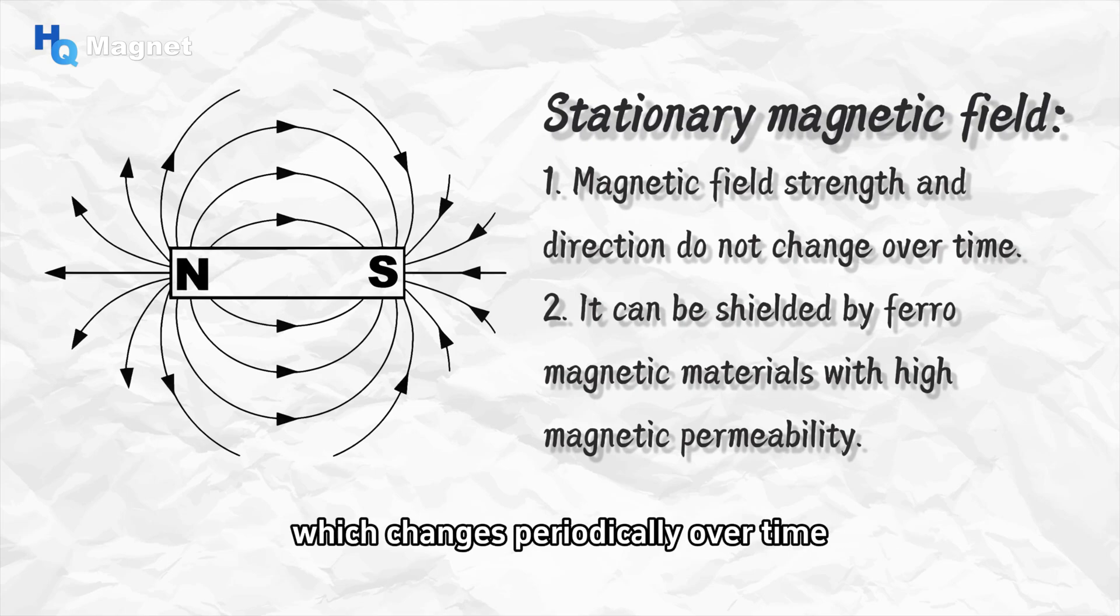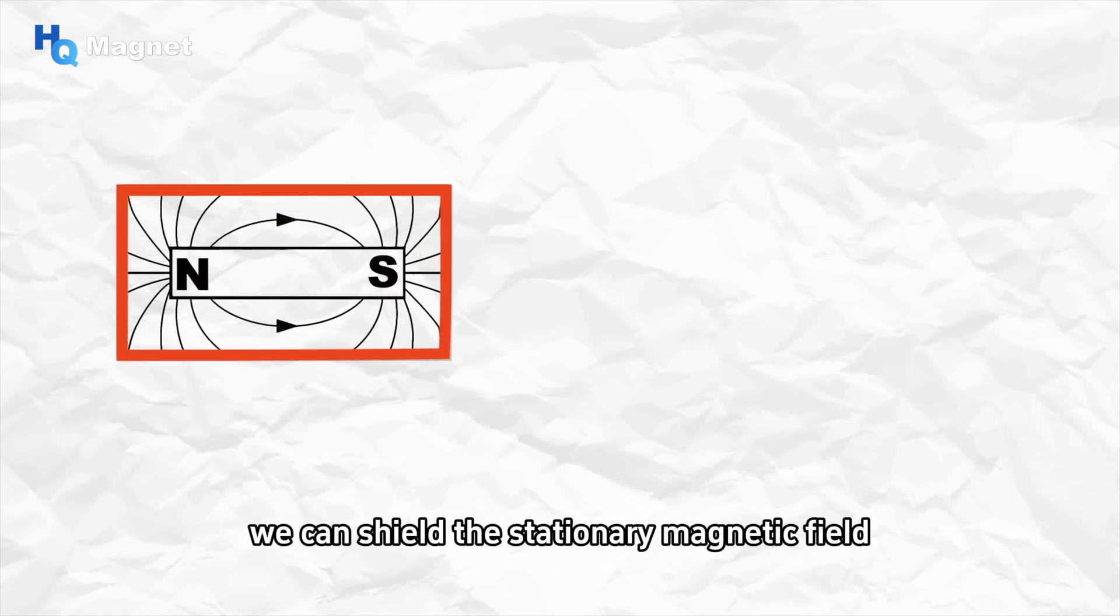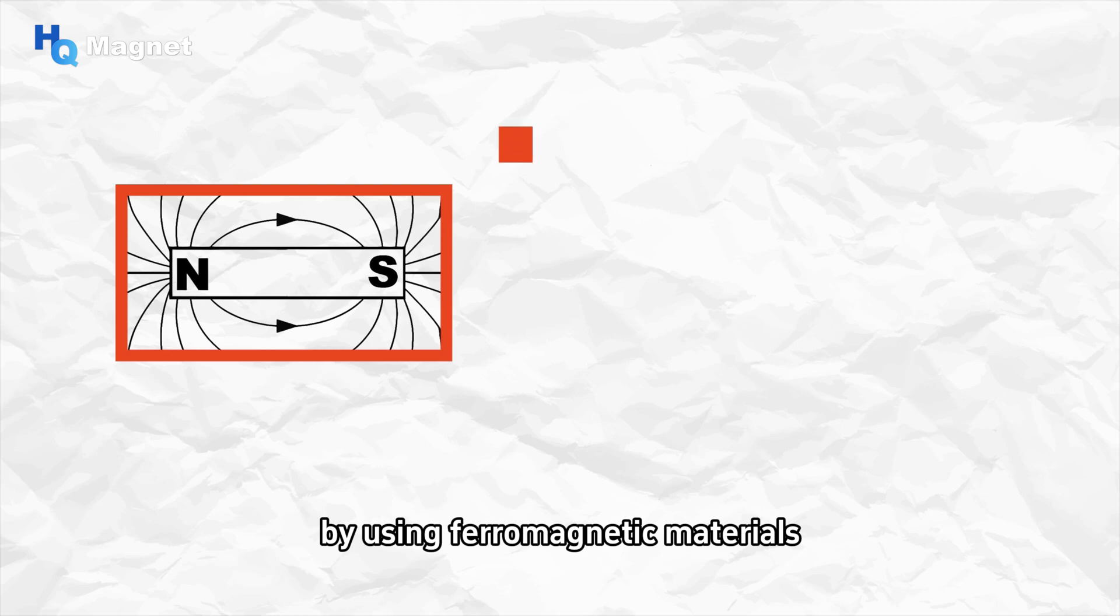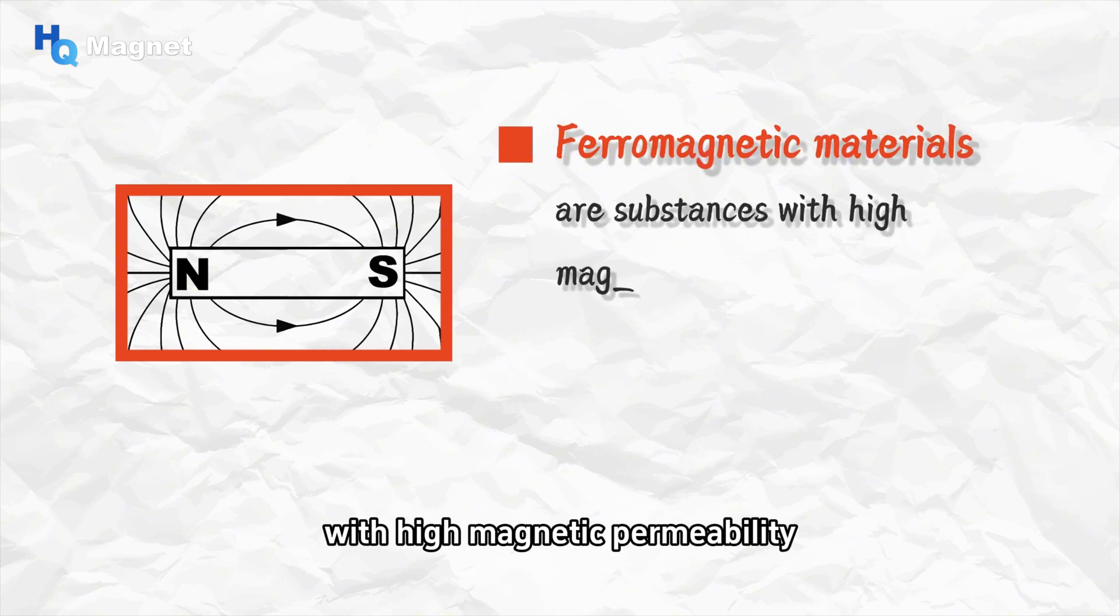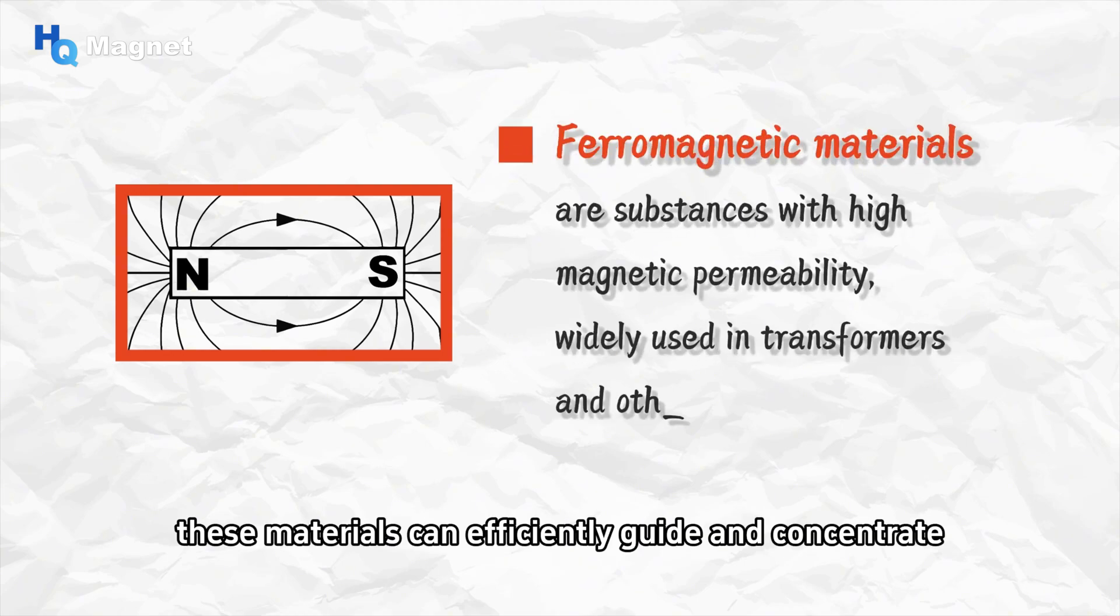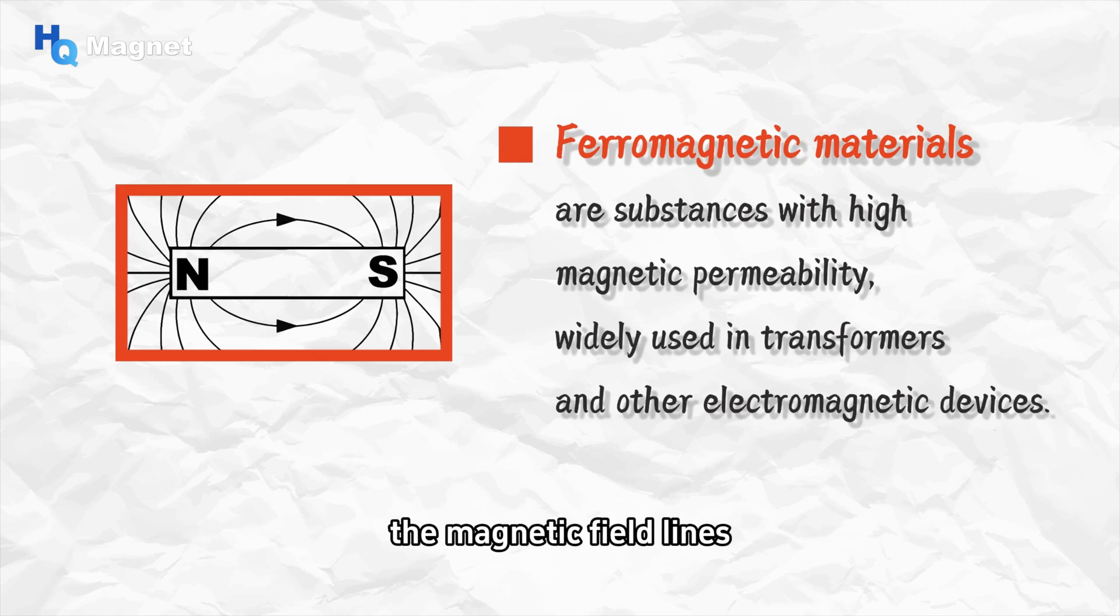We can shield the stationary magnetic field by using ferromagnetic materials with high magnetic permeability. These materials can efficiently guide and concentrate the magnetic field lines and prevent the magnetic field from spreading.